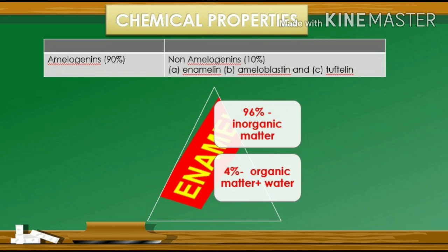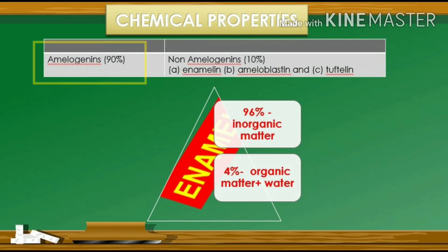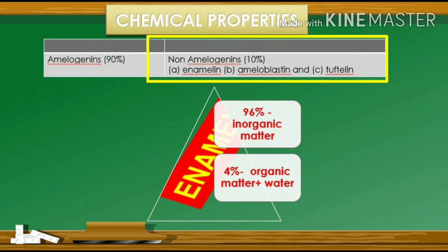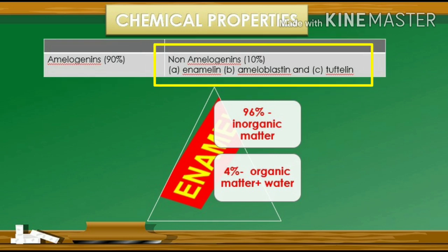The organic components of enamel consist of two main groups of proteins: amelogenins, comprising 90%, and non-amelogenins, comprising 10%. Important proteins of the non-amelogenin group are enamelin, ameloblastin, and tuftelin.